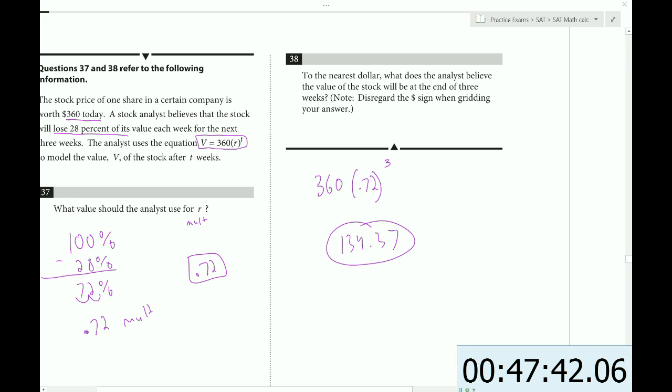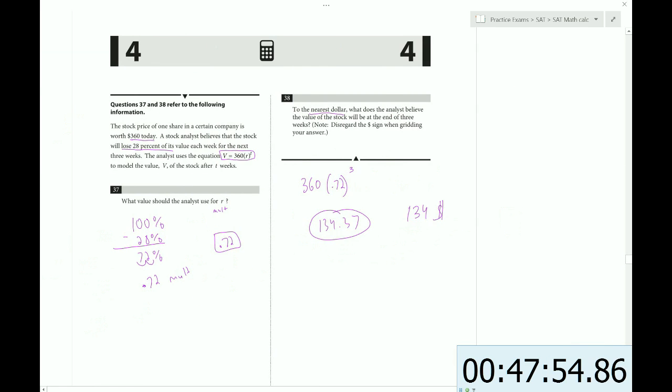134.37. That's rounded up. And what kind of rounding do they need us to do here? To the nearest dollar. So to the nearest dollar, that would be $134. And that's it.